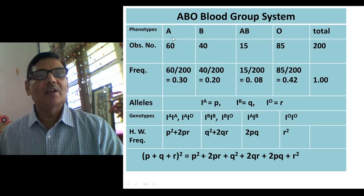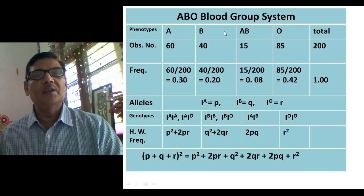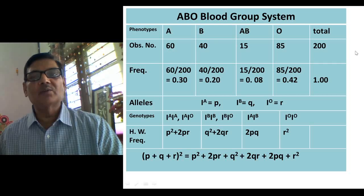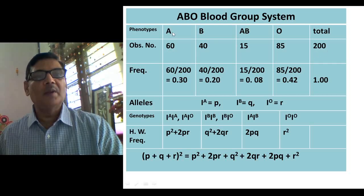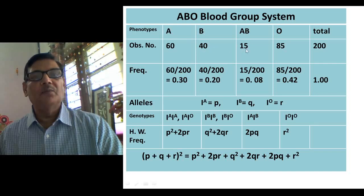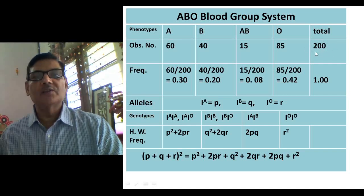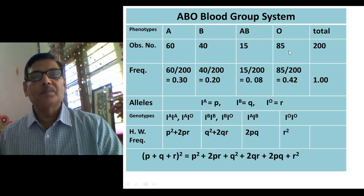Our entire human population can be categorized into four blood group types: A, B, AB, and O. Suppose you have collected data from a population and found that 60 individuals out of 200 are blood group A, 40 are blood group B, 15 are blood group AB, and 85 are blood group O. These 200 individuals were randomly sampled and typed using antibodies A and B.